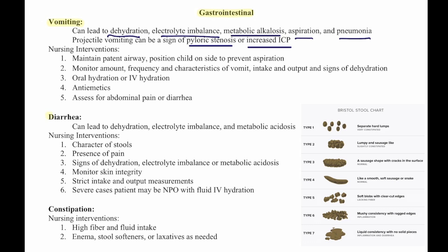Then we have diarrhea. This is important because it can lead to dehydration, electrolyte imbalance, and metabolic acidosis. Take note: diarrhea is associated with acidosis, and we remember that vomiting is associated with metabolic alkalosis.